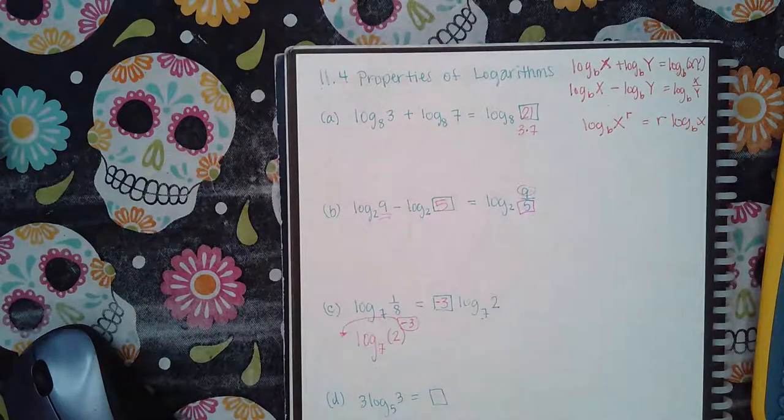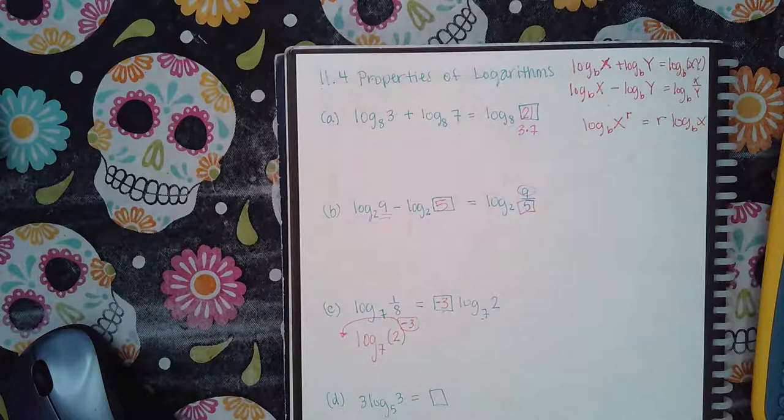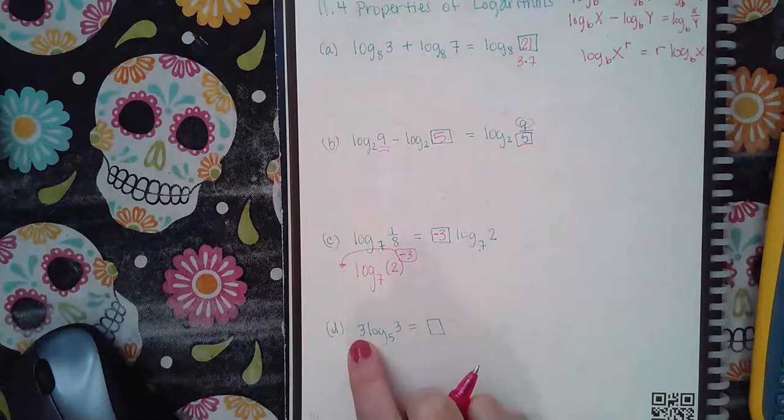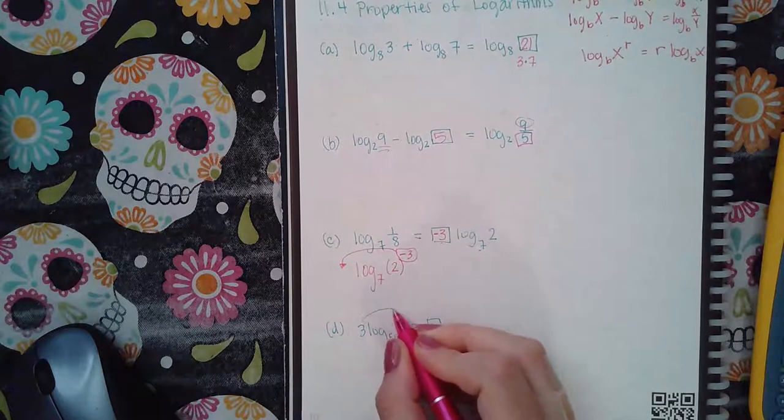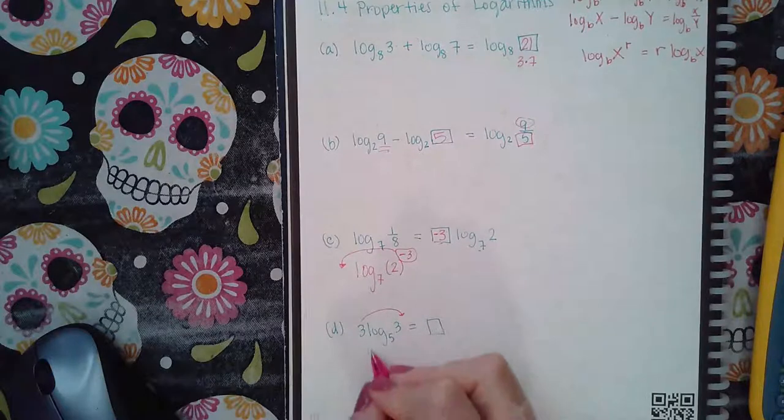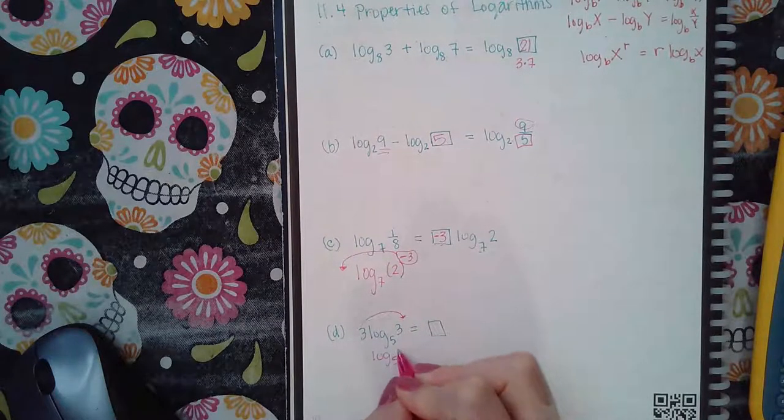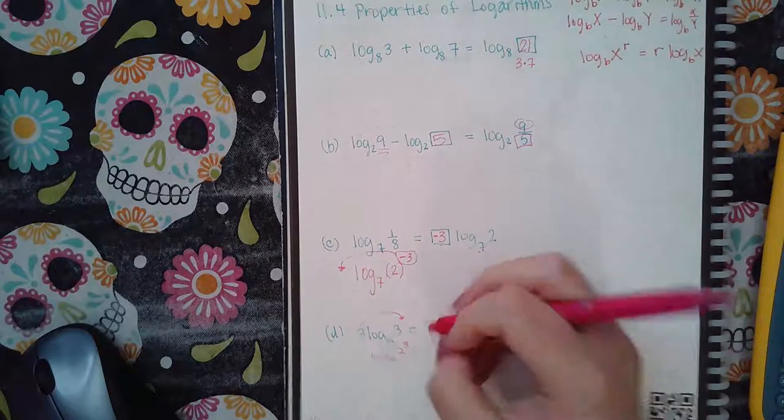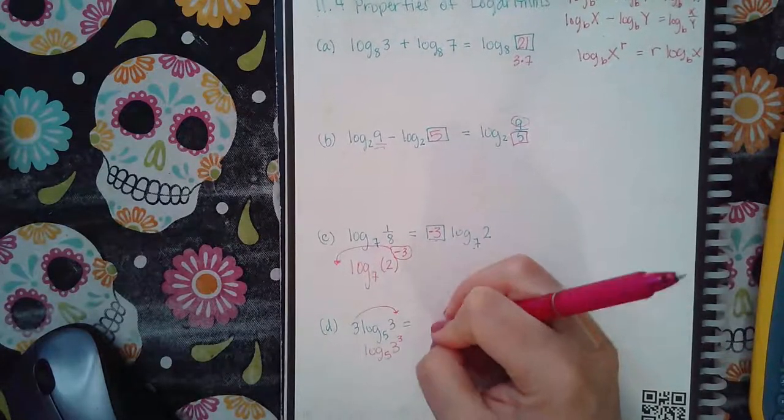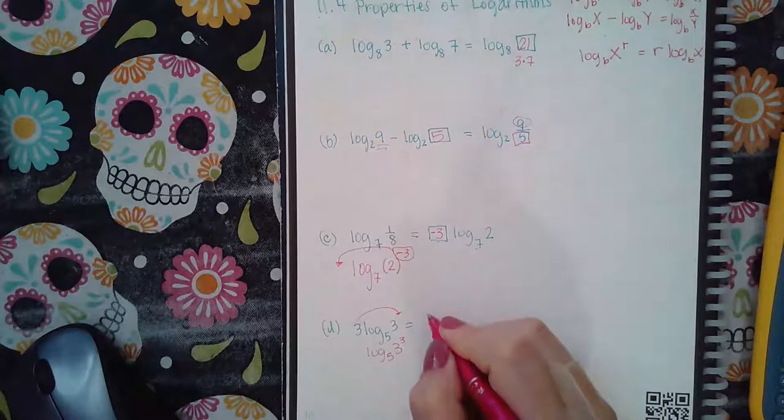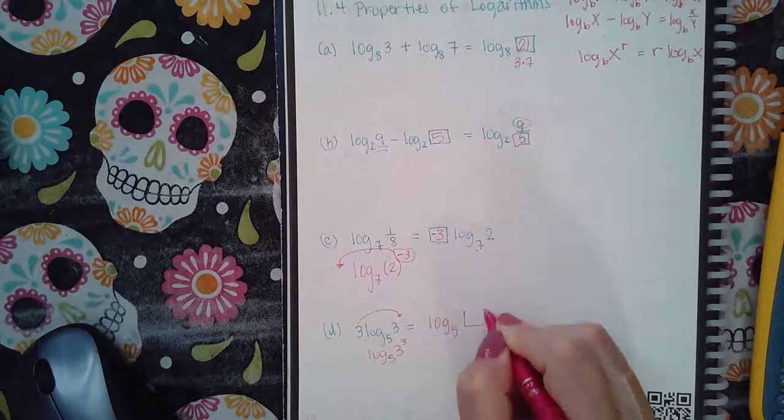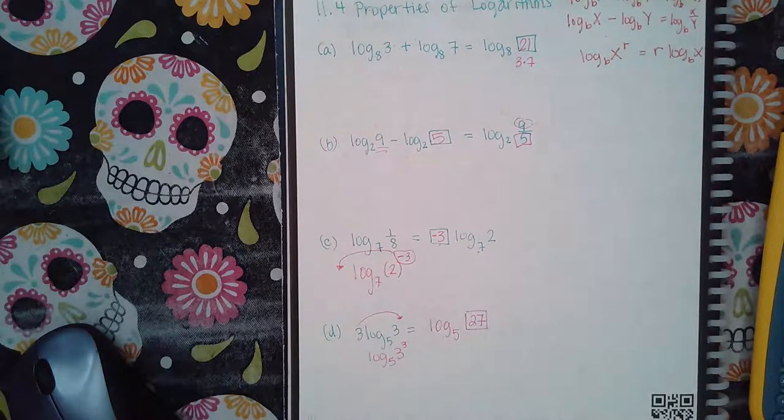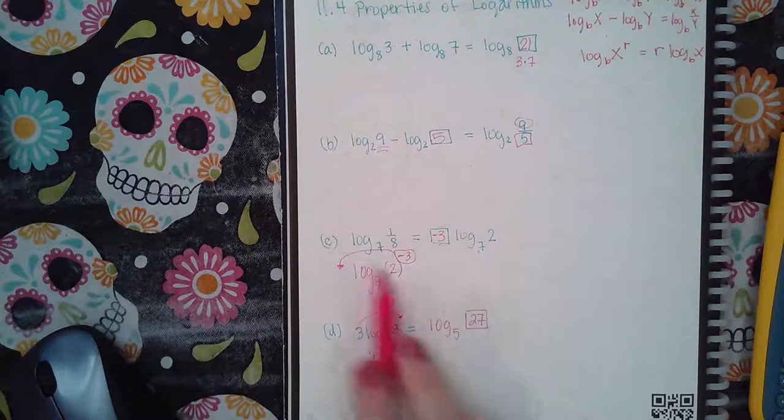Now the last one is the reverse. They have the multiple on the front, they want you to pull it back up to the exponent. So then this becomes log 3 to the third. Actually it's log to the fifth, and then it has a box here. 3 to the third is 27, and so then you would put the answer in there. So it could go in either direction.